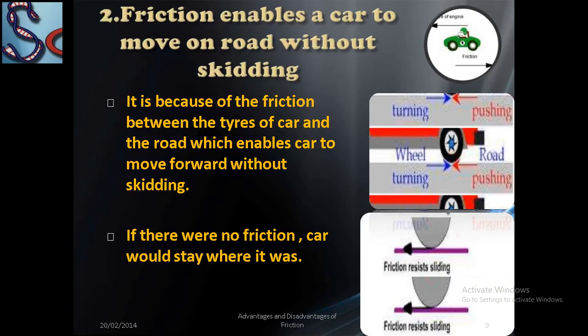Friction enables a car to move on a road without skidding. It is because of the friction between the tires of the car and the road which enables the car to move forward without skidding. If there were no friction, the car would stay where it was and would not be able to stop or brake because of the absence of friction. You can see in the diagram: the car tire pushing and the road providing friction force.